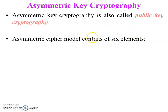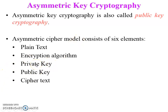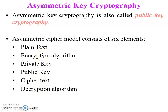There are six elements in the asymmetric cipher model. The first is plaintext, the second is encryption algorithm, the third is private key and public key — this is the key pair. The fifth is ciphertext, and the sixth is decryption algorithm. These are the essential ingredients of the asymmetric cipher model, and all definitions of these elements have already been discussed in the basic terminology of network security video.